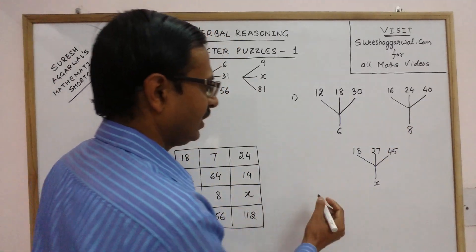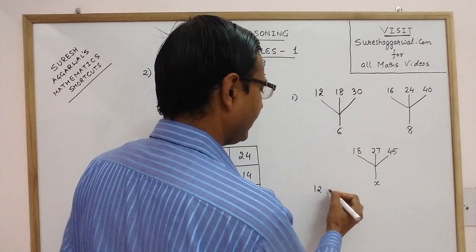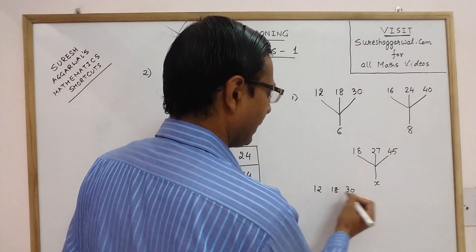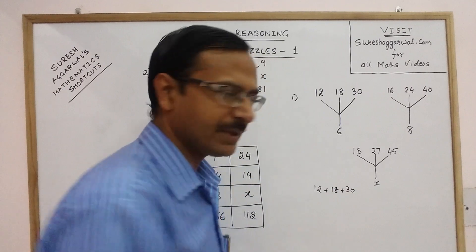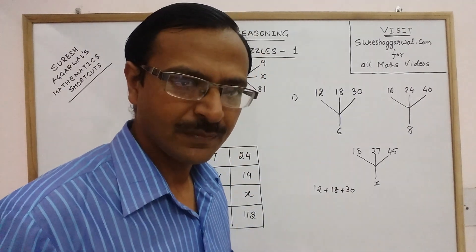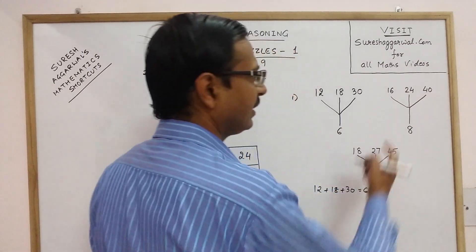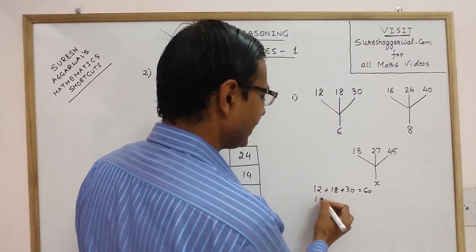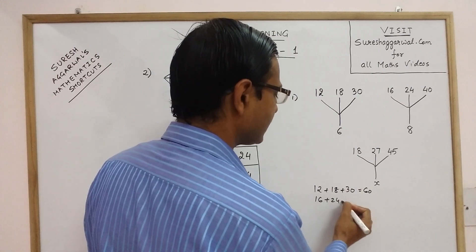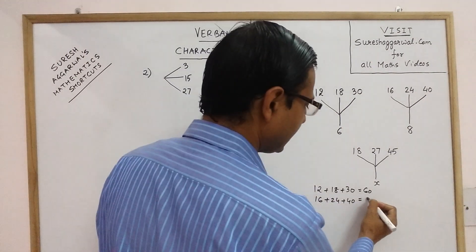Now in this question, if you see the three numbers on the top 12, 18 and 30, if you add the three numbers, you get 30 plus 30, 60 and similar pattern. If you see in the second character, 16 plus 24 plus 40, you get 16 plus 24 is 40, so 40 plus 40 is 80.